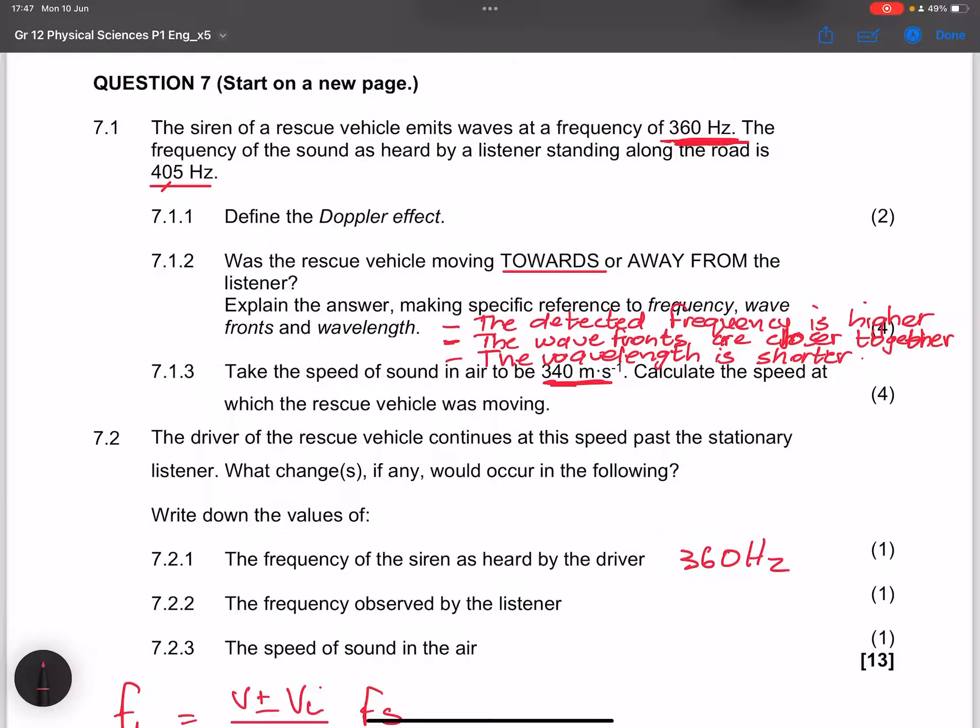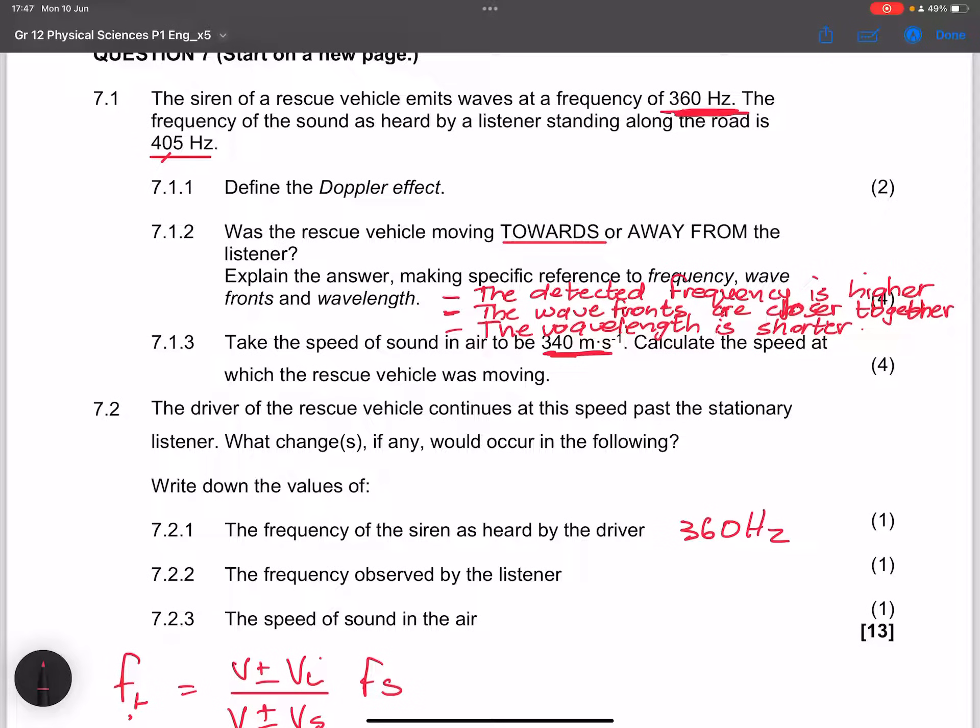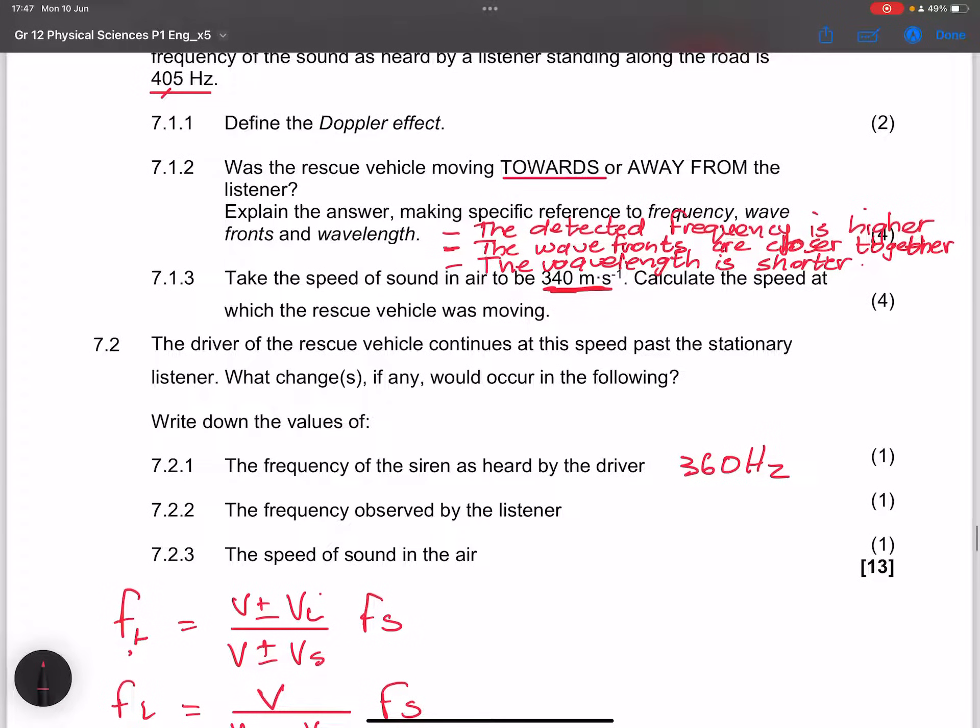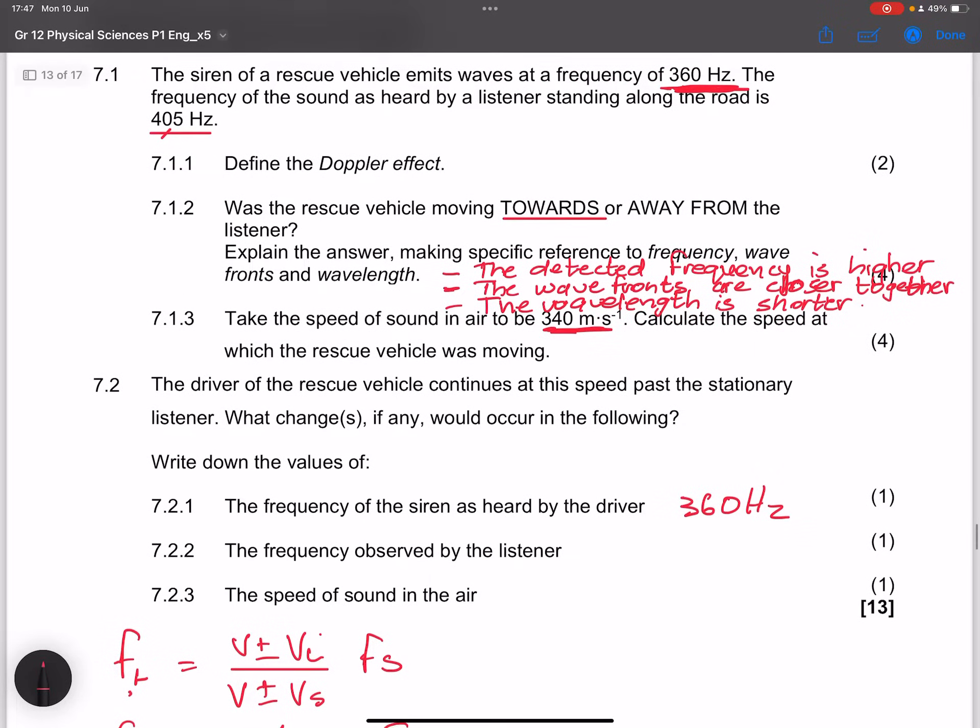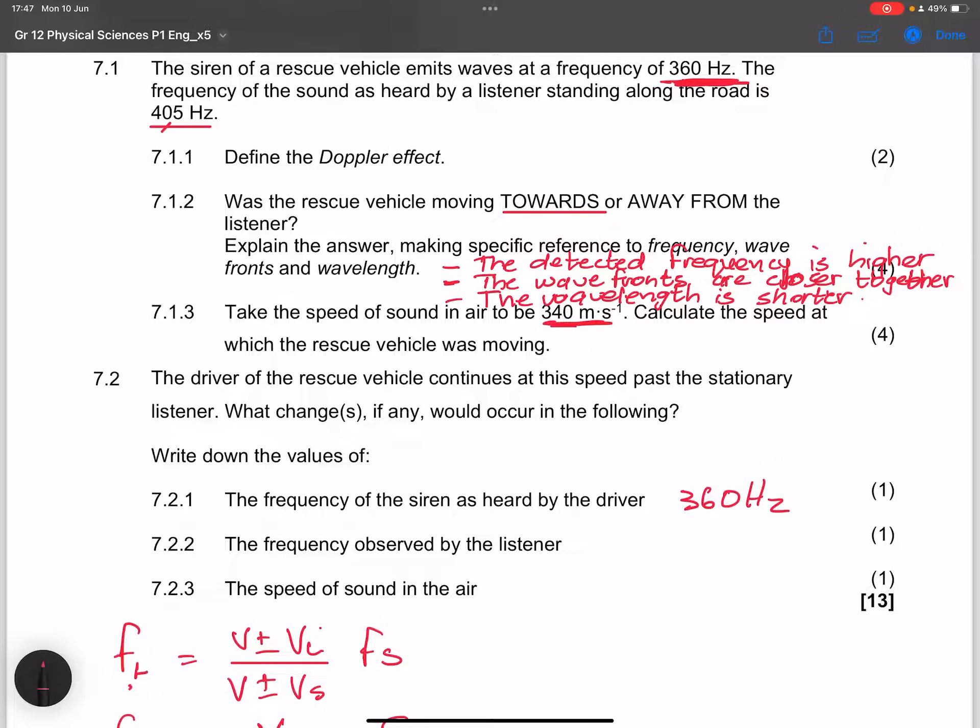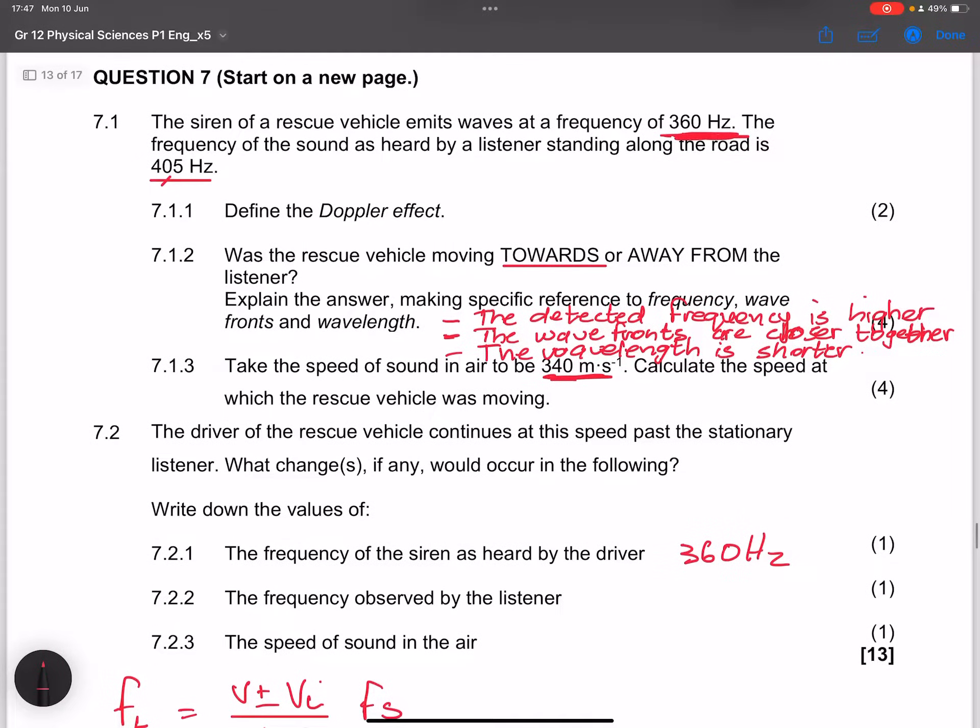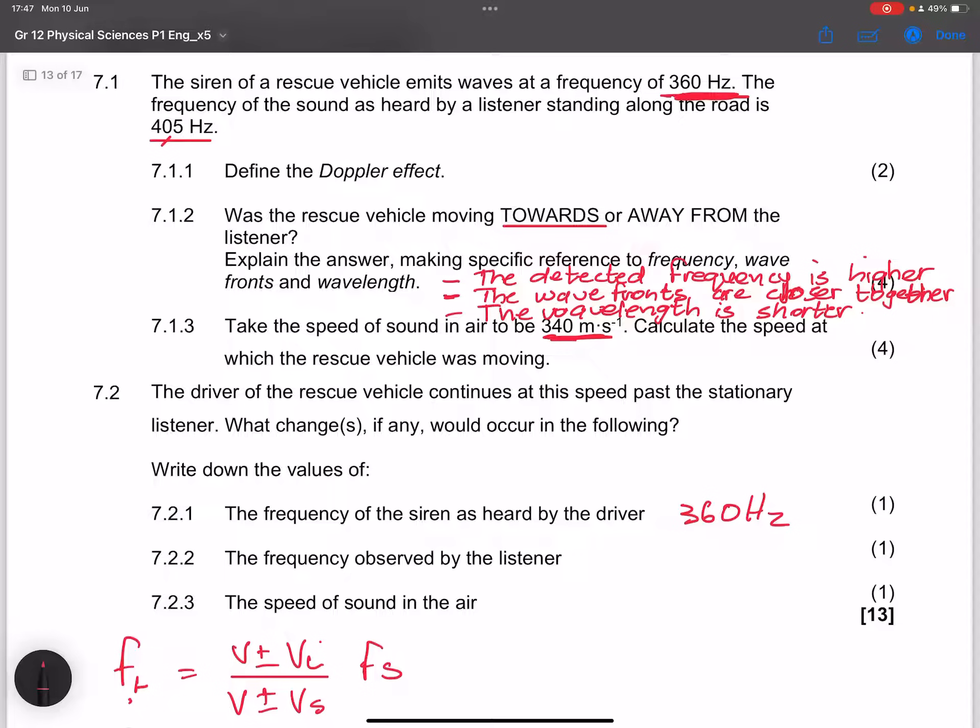Now, they say the frequency observed by the listener. In this case, what we can do is we can actually make a quick calculation there. I think this would really require a bit of a calculation. Or, you know, I think they said what changes, if any, would occur there. So perhaps let's just say less than 360, because that would otherwise require a calculation. So it would definitely be less than 360, the frequency of the source.